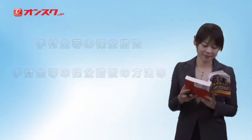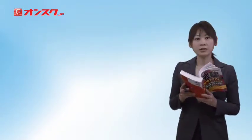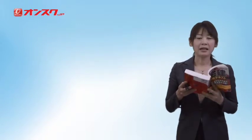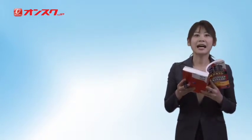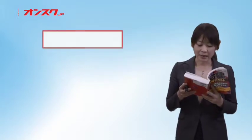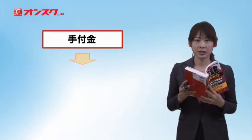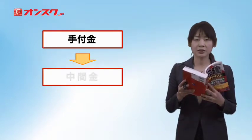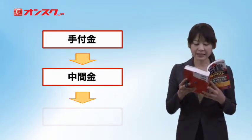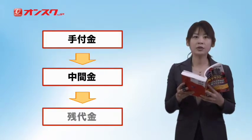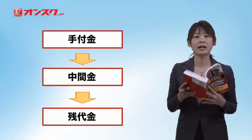今回は8種類制限の中の手付金等の保全についてです。まず手付金等の保全措置、そして手付金等の保全措置の方法について勉強していきます。不動産の売買においては、買い主から売り主に対してまず手付金を支払って、その後中間金を支払い、最後に物件の引渡しと同時に残代金を支払う、こういう手順で契約が実行されることが多いです。